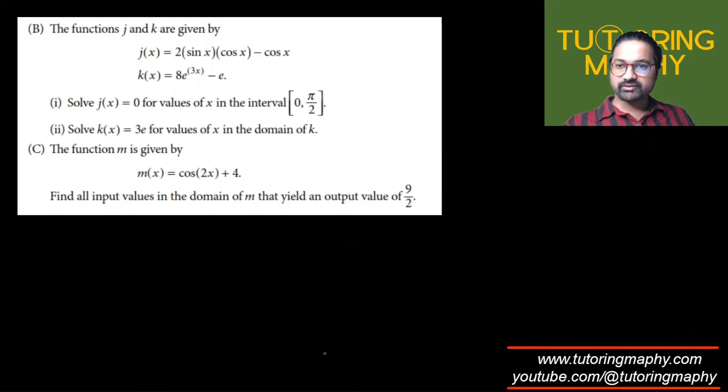There are some other parts associated with this question as well. The functions j and k are given by this. So we need to solve for when j(x) = 0 for the values of x in the interval of 0 to π/2. That's part number one of B. By the way, the calculator is indeed allowed, so feel free to use it. This is from part B. So j(x) = 0 means 2sin(x)cos(x) - cos(x) = 0.